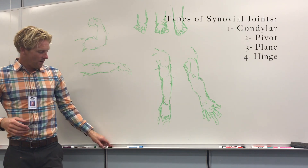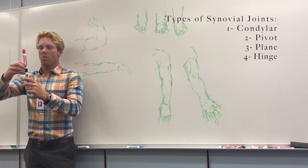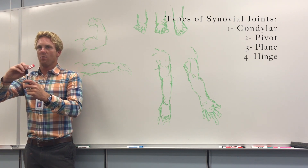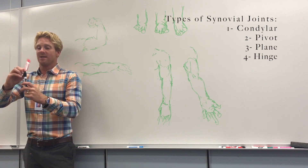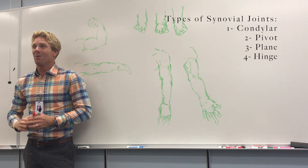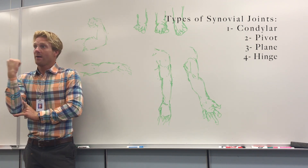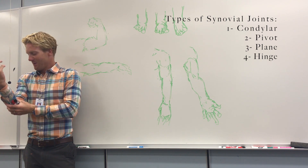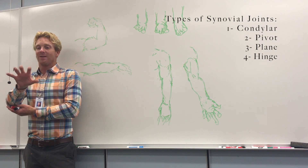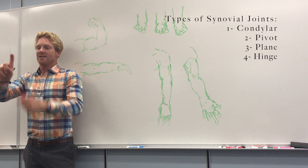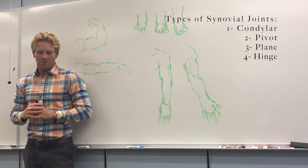Next, we have a hinge joint. A hinge joint is one in which the bones can only move in one axis — the bones can't spin, they can't move in any other direction. A great example is your elbow: you can go back and forth, but you can't twist it, and you obviously can't move in any other axis. Other examples are your interphalangeal joints — the joints of your fingers — these can bend in one direction, but you can't spin them.